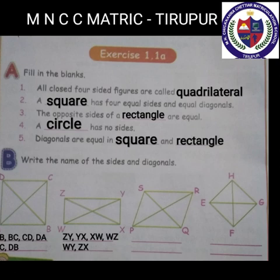B Roman: Write the names of the sides and diagonals. First picture — sides are AB, BC, CD, DA and diagonals are AC and BD. Second picture — sides are WX, XY, YZ, ZW and diagonals are WY and ZX.